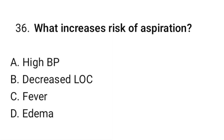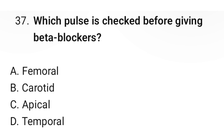Question number 36: What increases risk of aspiration? The correct option is B: Decreased LOC. Question number 37: Which pulse is checked before giving beta blockers? The correct option is B: Apical.